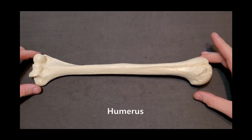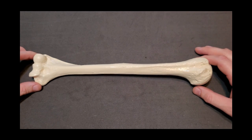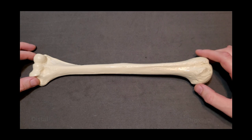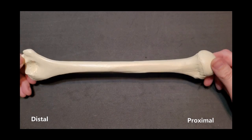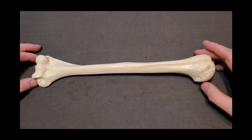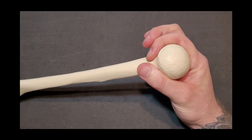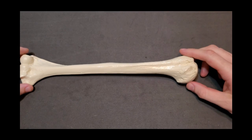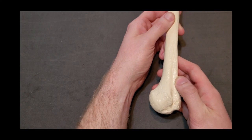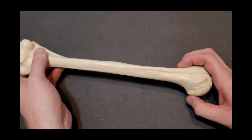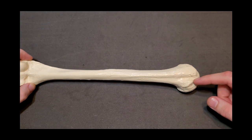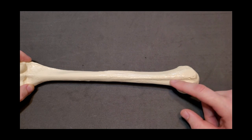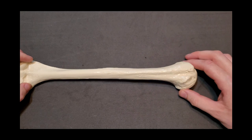Next we look at the humerus — currently a right humerus with the proximal end up. Key landmarks for orientation include the large smooth articular head at the proximal end facing medially, and the bicipital groove facing anteriorly. These two landmarks — head medially and bicipital groove anteriorly — are enough to determine if you have a right or left humerus.